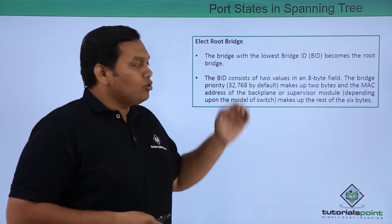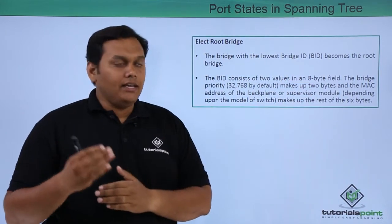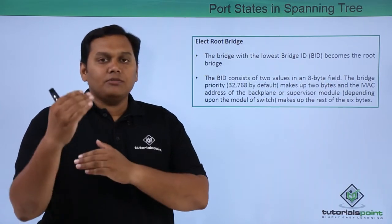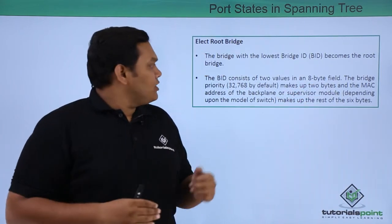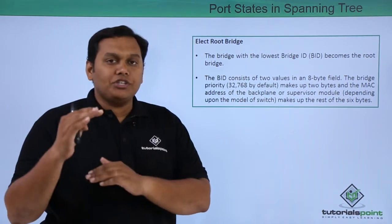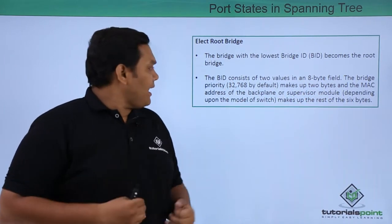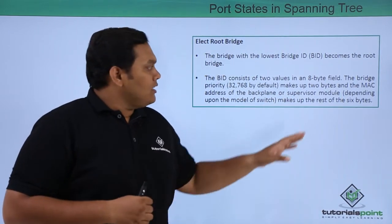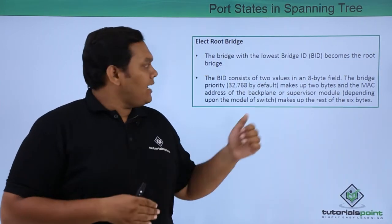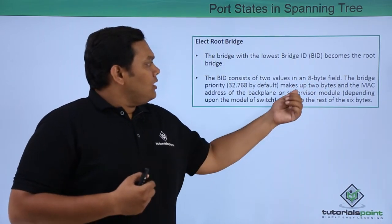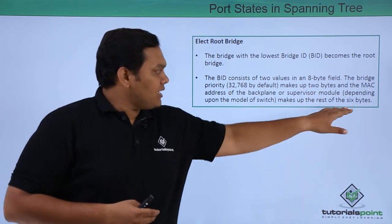Electing a root bridge is the first step. The bridge with the lowest bridge ID (BID) becomes the root bridge. The BID consists of two values in an 8-byte field: the bridge priority, which defaults to 32768 and occupies 2 bytes, and the MAC address of the backplane, which makes up the remaining 6 bytes.